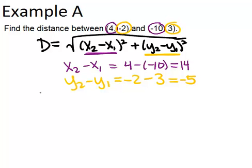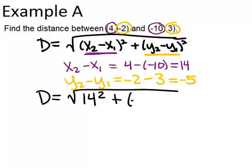And once you know those two numbers, it's not too hard to finish off and find your answer. You just plug them in. The distance is the square root of x2 minus x1, which is now 14, squared, plus y2 minus y1, which is negative 5 squared.